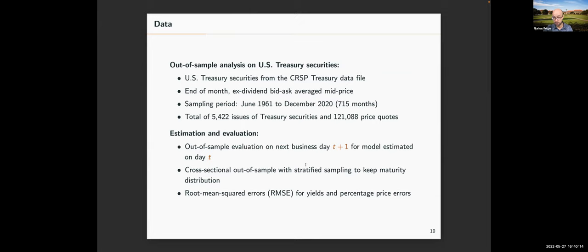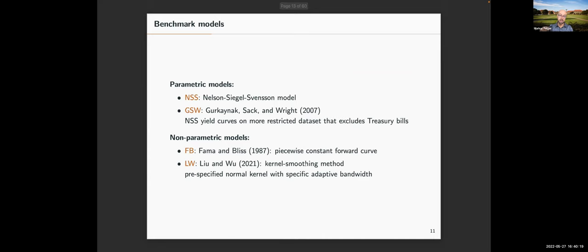The benchmark models include the Nelson-Siegel-Svensson (NSS) parametric model, Gürkaynak-Sack-Wright (GSW) which implements Nelson-Siegel on a restricted data set with publicly available estimates, and in terms of non-parametric models: the Fama-Bliss estimator (FB), which assumes a piecewise constant forward curve, and the Liu-Wu kernel smoothing method from a recent paper using pre-specified normal kernels with adaptive bandwidth selection. Related papers have shown kernel smoothing outperforms local splines, so by transitivity our method will also outperform splines.